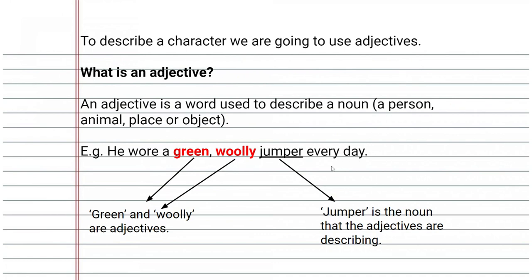In this sentence, he wore a green woolly jumper every day. Jumper is the noun because it is the name of the object. The words green and woolly are adjectives.